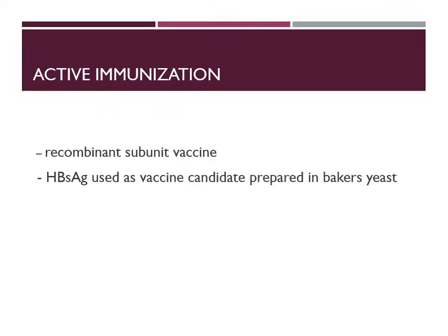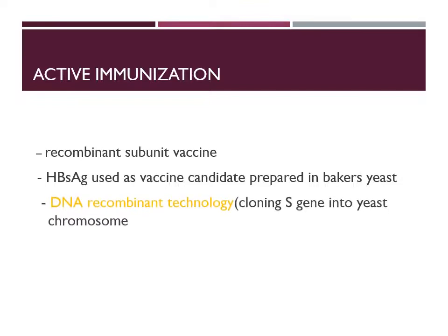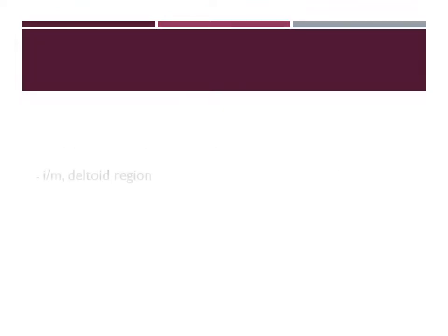The antigen used is the surface antigen, that is the HBsAg. This has been introduced into baker's yeast using recombinant DNA technology, because the hepatitis B virus itself is a DNA virus. This process involves cloning the S gene into the yeast chromosome.